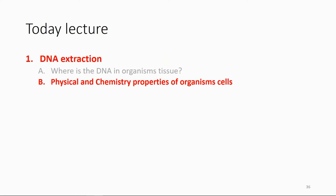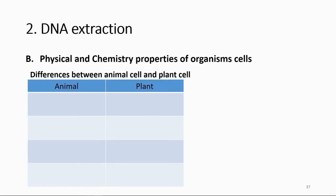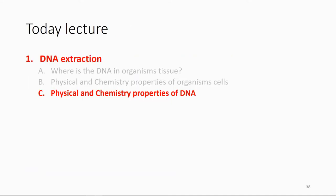After knowing where the DNA is, you need to know the physical and chemical properties of the organism cell. You have already learned this in cell biology and genetics, so make sure you know the differences between animal and plant cells — for example, plant cells have a cell wall and animal cells don't. Spend half an hour or an hour on revision to remember all these things.